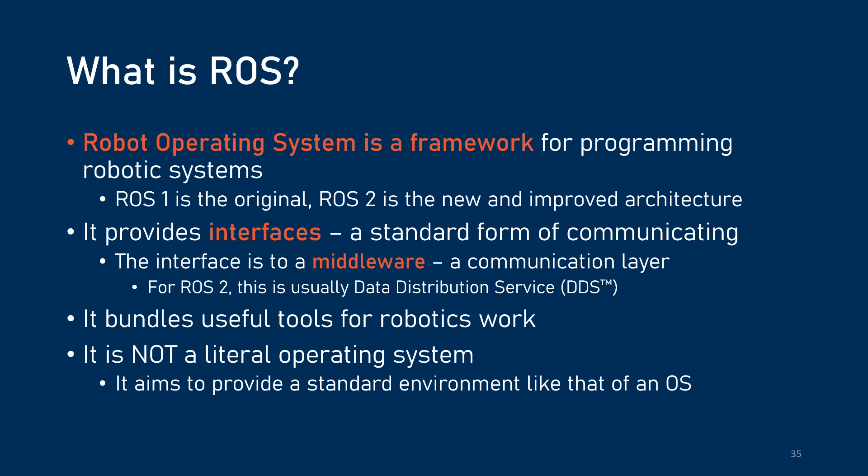ROS is a framework for programming robotic systems. One of the major things it provides is a standard way of communicating between different software modules, so a bunch of people can independently develop robot software with their own programming languages and have them be able to talk to each other over a middleware or communication layer between those programs.